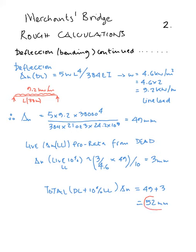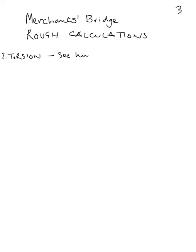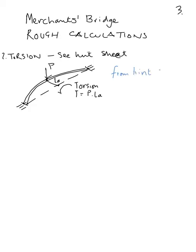Now we can move on to the next section where we look at the torsion component. We are going to use an idealized section for the torsion constant. The hint sheet gives a way of estimating the torsion, which is the total P times the lever arm, the centreline of the bridge from that straight line drawn between the abutments, and that's 2.7 metres.